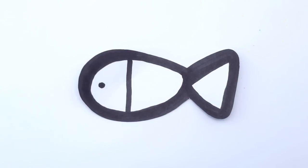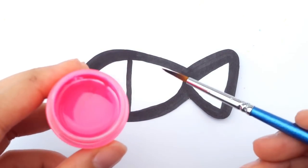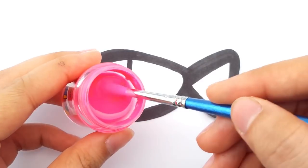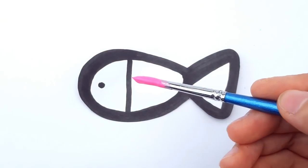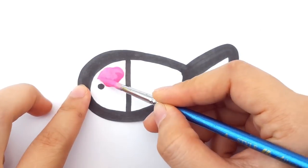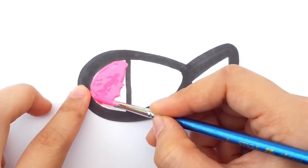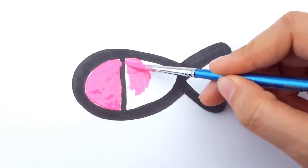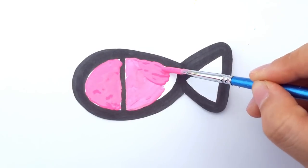Now let's color the fish number two with pink color. I color the head first, and then the body and the tail.